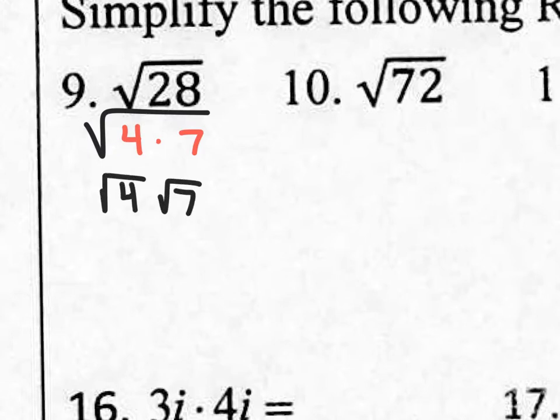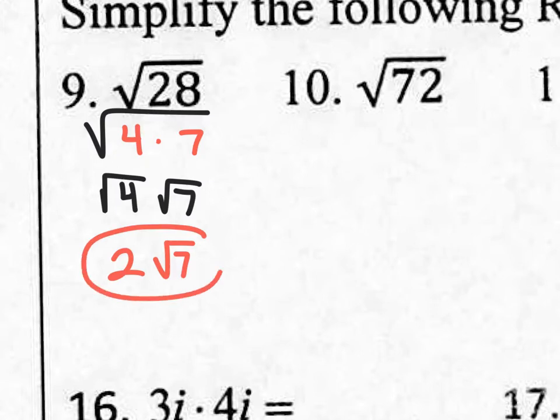What is the square root of 4? The answer is 2. What's the square root of 7? I'm going to leave it as the square root of 7. And ladies and gentlemen, that is simplified. Yes, you're done.